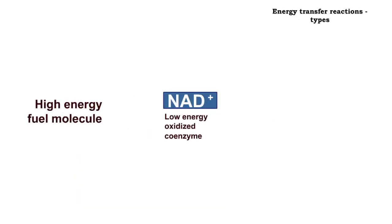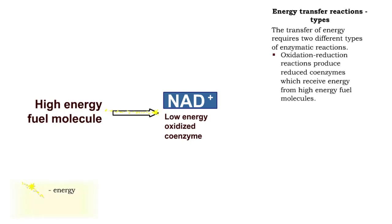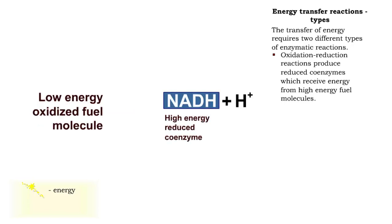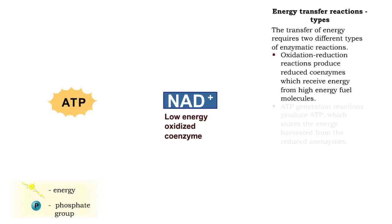The transfer of energy requires two different types of reactions. Energy is transferred from the fuel molecule to intermediate molecules called reduced coenzymes using the oxidation-reduction reaction. The reduced coenzymes then transfer the energy to ATP in a separate reaction.